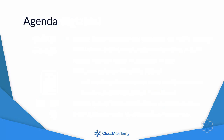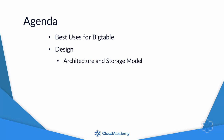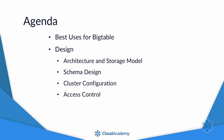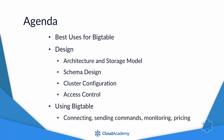In this course, we'll start by going over the best uses for Bigtable. Next, we'll look at its architecture and storage model. Then you'll see how to optimize performance by designing a good schema and configuring a cluster. After that, we'll go over how to increase security through access control. And finally, I'll show you how to run a Hadoop job that writes its results to Bigtable. During that exercise, you'll also see how to send commands to Bigtable, monitor its performance, and understand its pricing.